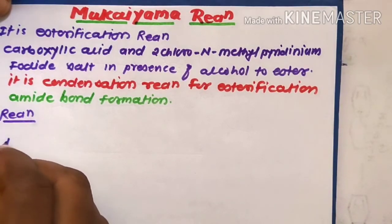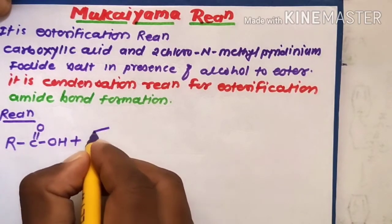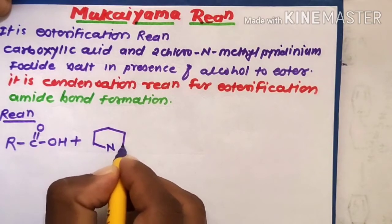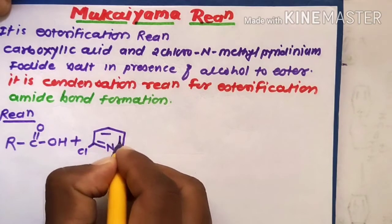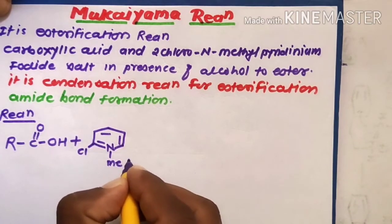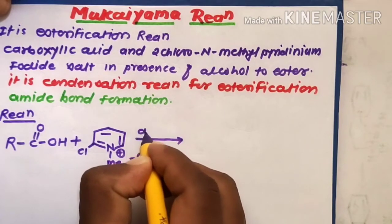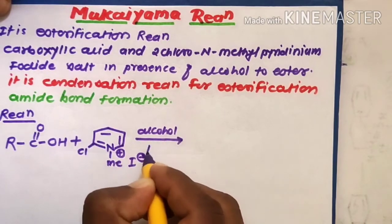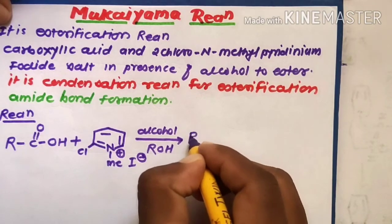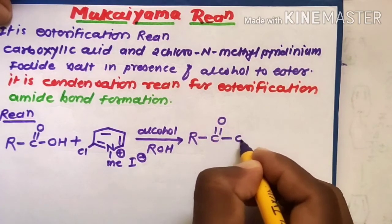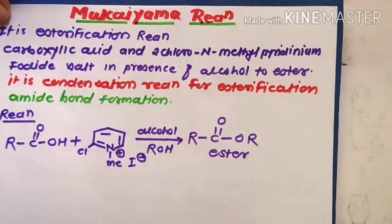In the general reaction, carboxylic acid (R-C double bond O-OH) reacts in the presence of 2-chloro-N-methyl pyridinium iodide salt and alcohol (R-OH) to form an ester (R-C double bond O-OR). These are the final products of Mukaiyama reactions.